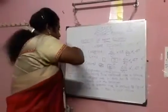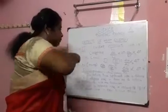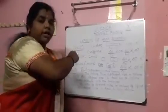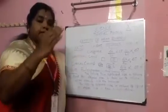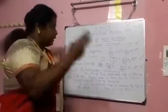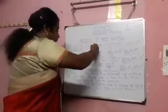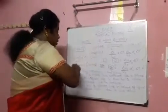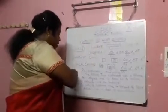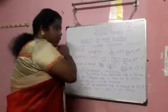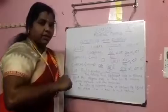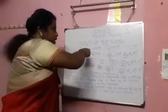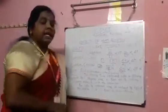Now we see the solid. For the solid, there are three types of expansion: linear, superficial, and cubical expansion.